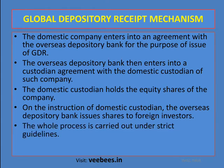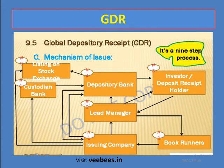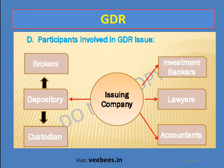The whole process is carried out under strict guidelines. GDRs are usually denominated in US dollars. The participants in a GDR issue include lead manager, issuing company, book runner, and listing on stock exchanges. Other participants include broker, depository, custodian, issuing company, investment banker, lawyers, and accountants.